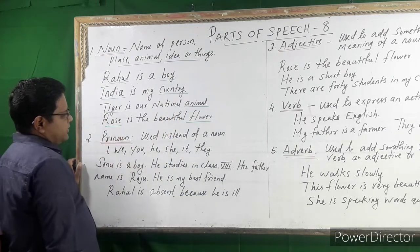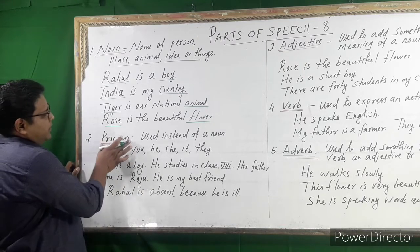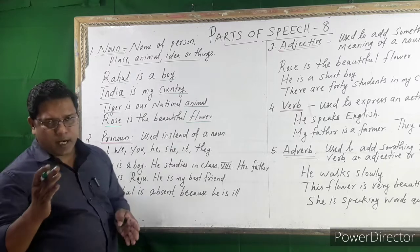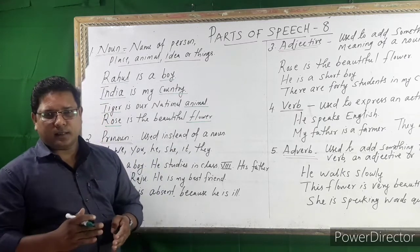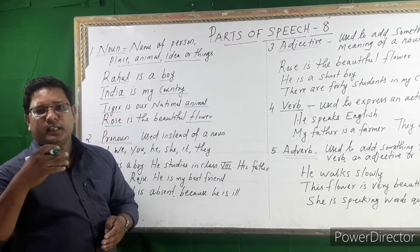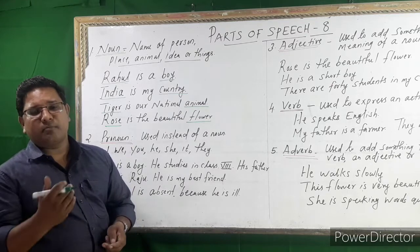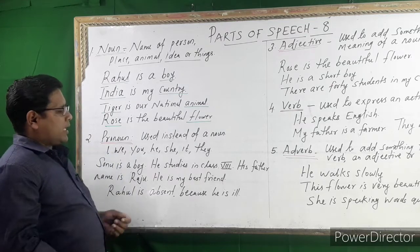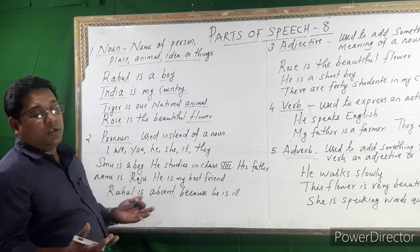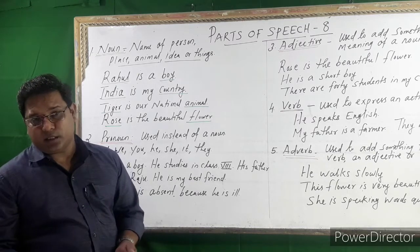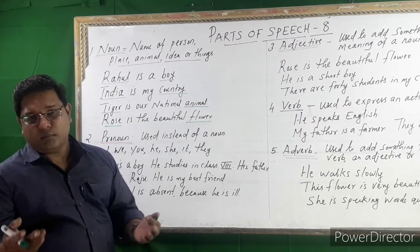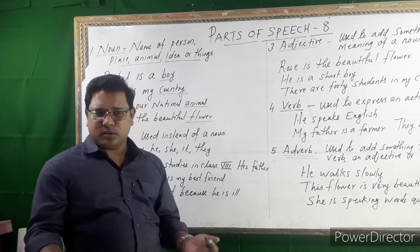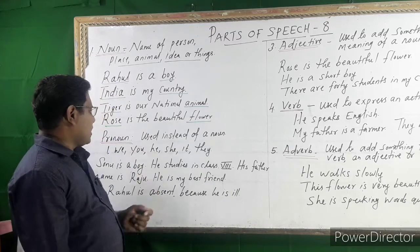Number two: Pronoun. What is a pronoun? Pronoun is used instead of a noun — in the place of a noun. Personal pronouns: I, we, you, he, she, it, they, my, mine, myself, our, ourselves, they, them, themselves — these are pronouns.